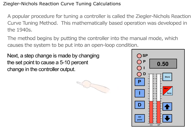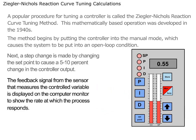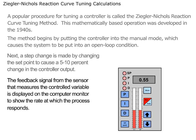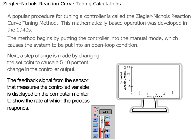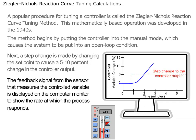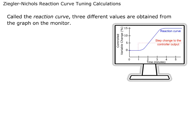Next, a step change is made by changing the setpoint to cause a 5-10% change in the controller output. The feedback signal from the sensor that measures the controlled variable is displayed on the computer monitor to show the rate at which the process responds. Called the Reaction Curve, three different values are obtained from the graph on the monitor.